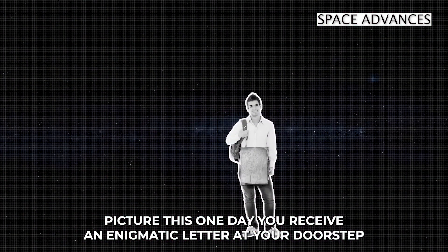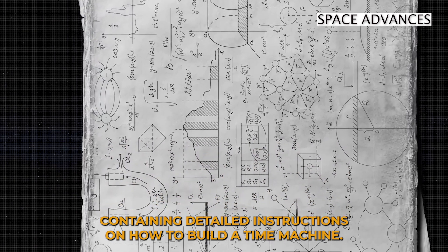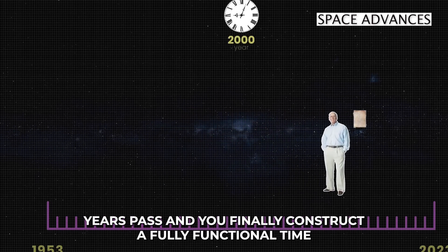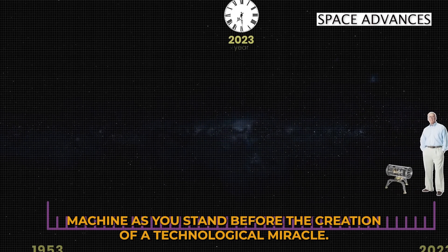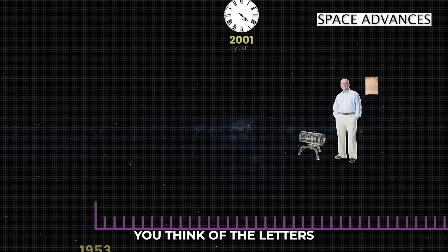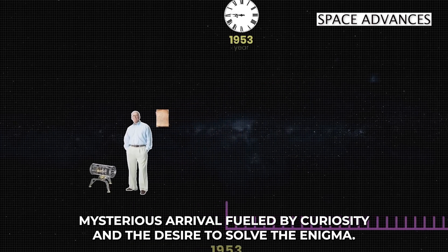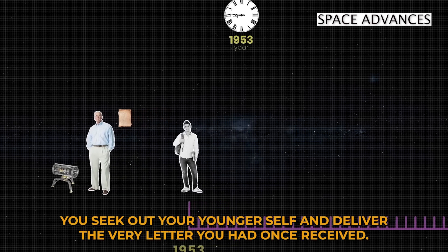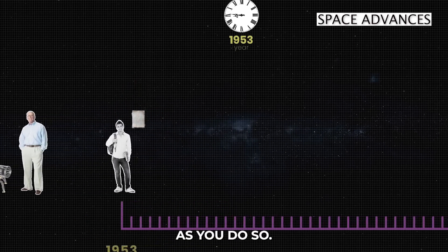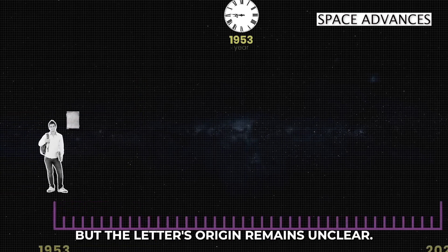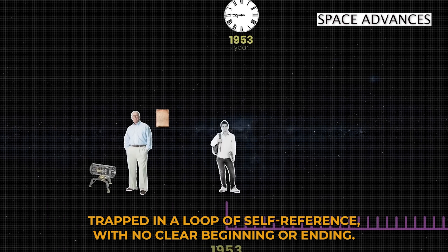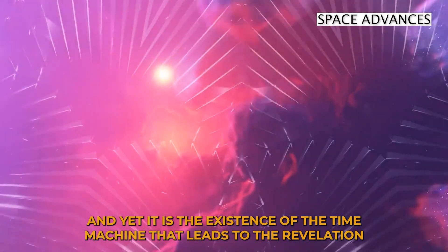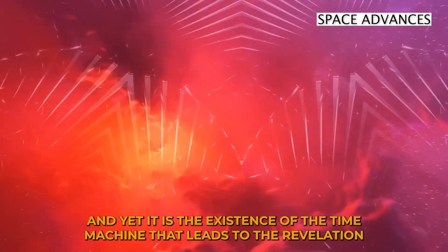Picture this. One day you receive an enigmatic letter at your doorstep, containing detailed instructions on how to build a time machine. The letter lacks any sender information, leaving you puzzled about its origin. Years pass, and you finally construct a fully functional time machine. As you stand before the creation of a technological miracle, you think of the letter's mysterious arrival. Fueled by curiosity and the desire to solve the enigma, you embark on a journey back in time. Upon reaching the past, you seek out your younger self and deliver the very letter you had once received. As you do so, you discover that you yourself was the sender. But the letter's origin remains unclear. It's forever trapped in a loop of self-reference with no clear beginning or ending. It's only through the discovery of the letter that the time machine can be built. And yet, it is the existence of the time machine that leads to the revelation of the letter.